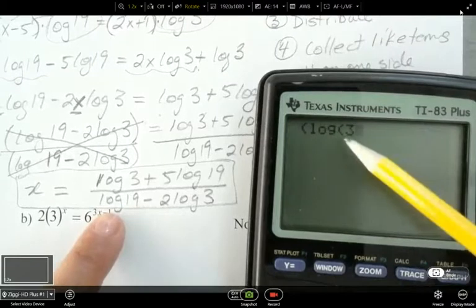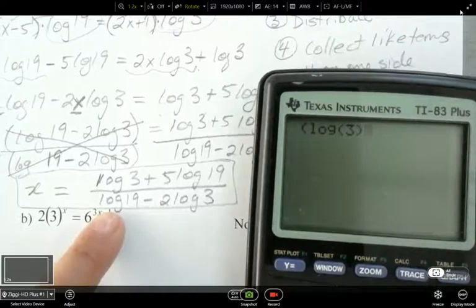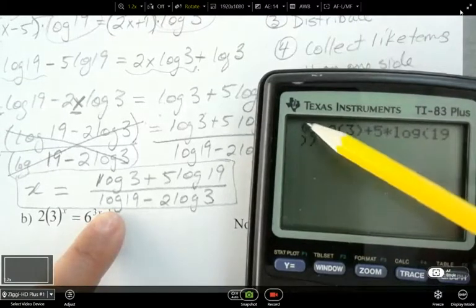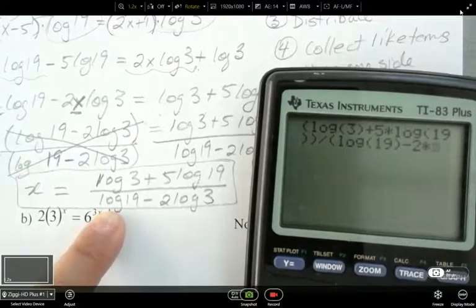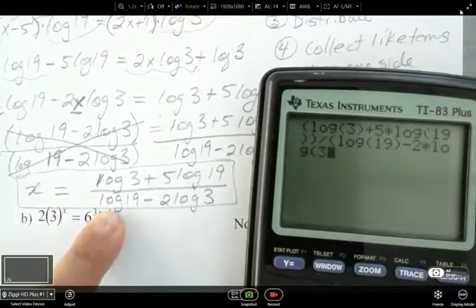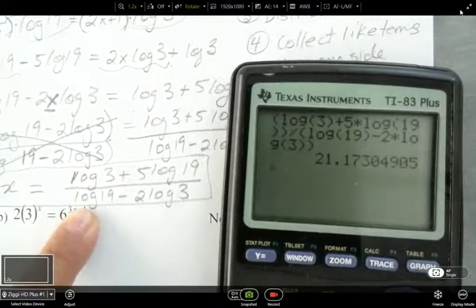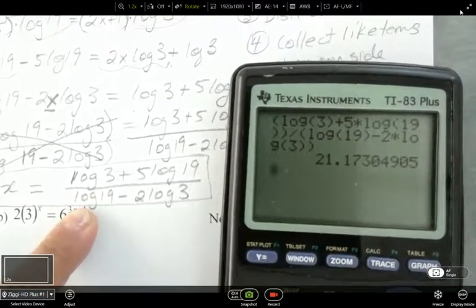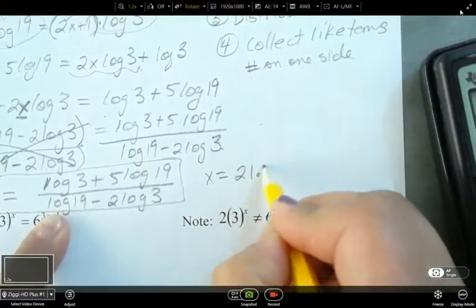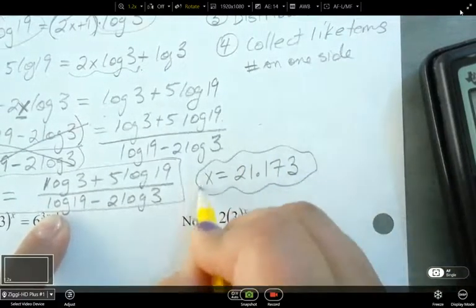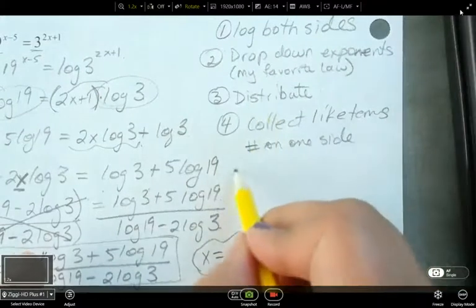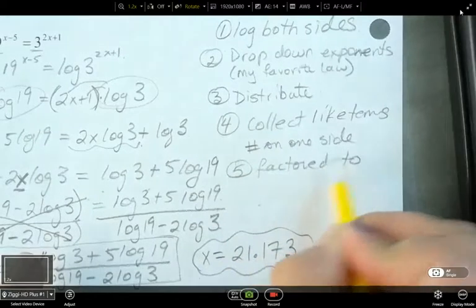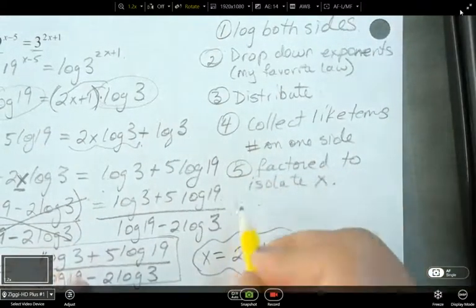This whole thing here is what my answer is. I can plug this into my calculator, and when you do so, make sure that you are being really careful about your brackets. So I'm going to have a bracket opening up my numerator, and then log 3, and now notice my calculator opens up a bracket for my argument, so I need to make sure I close that every time. Plus 5 times log 19. Close my bracket. Close again for this numerator, then divided by, open a bracket for my denominator, log 19, close that one. Minus 2 times log 3, and then bracket, bracket. So x equals 21.173, rounded to three decimal places.